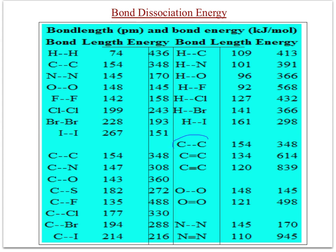A carbon-carbon single bond has a length of 154 picometers and requires only 348 kilojoules of energy to break. Looking at the double and triple bonds, the bond length is clearly decreasing, and since bond strength increases, a greater amount of energy is needed to break them.